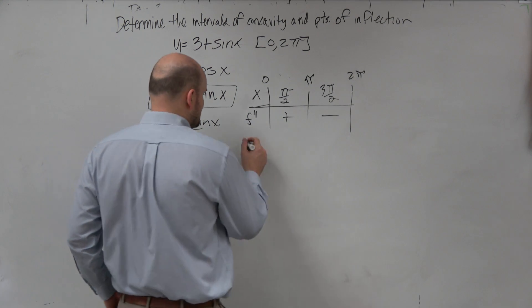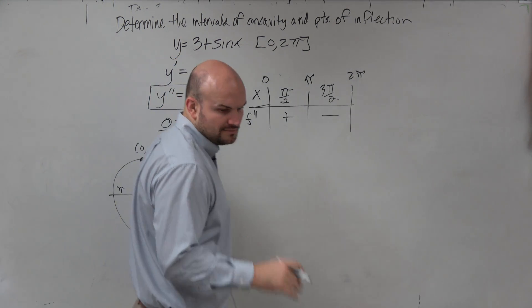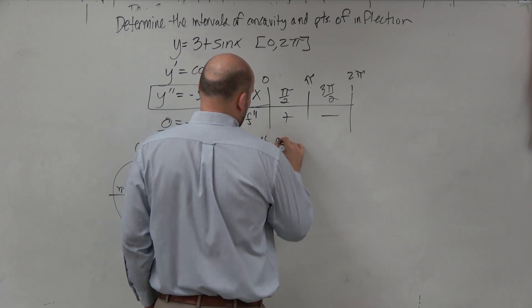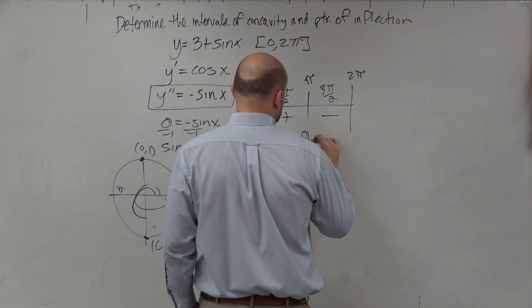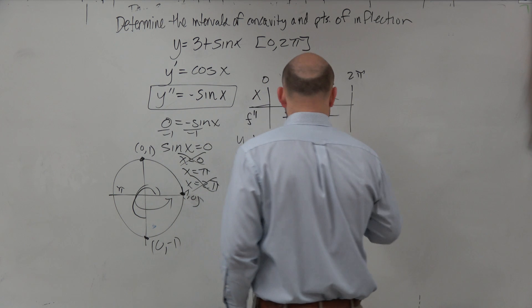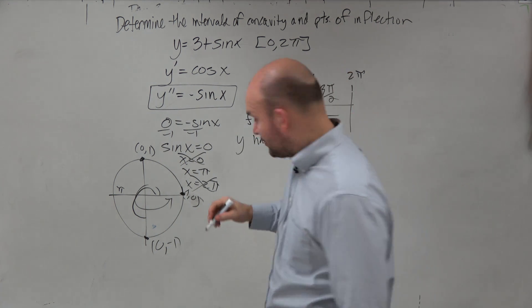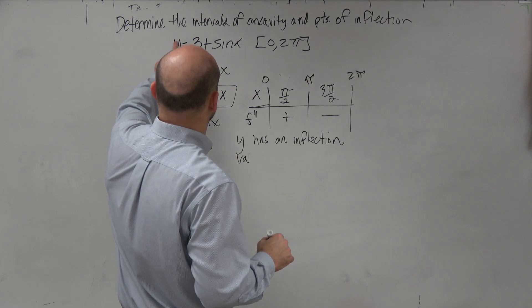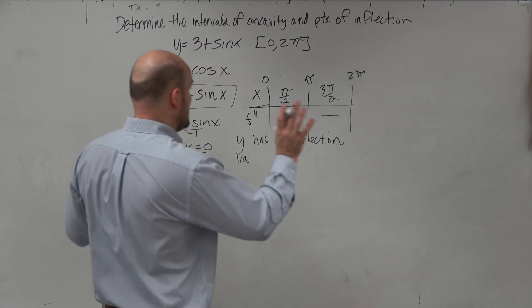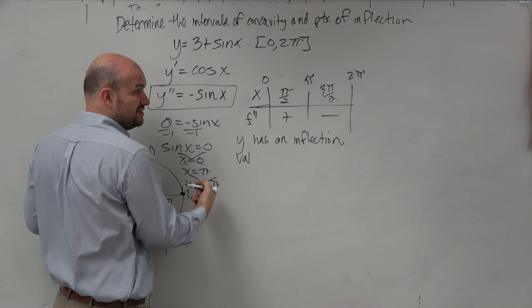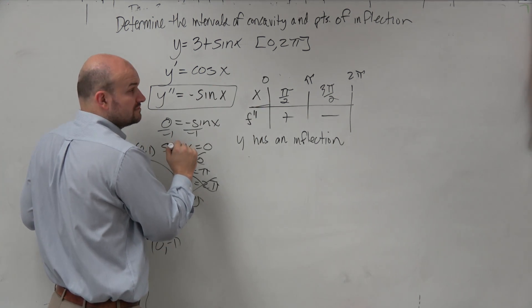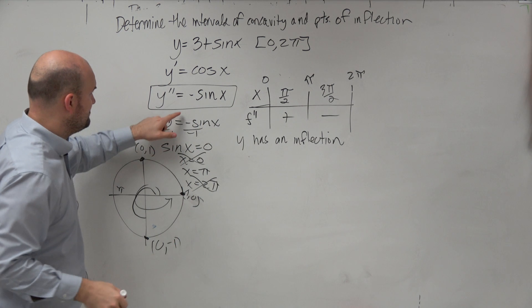So therefore, we can say y has an inflection. We're going to say value, because we're not going to give the points. Oh, and I say give the determinant value and points of inflection. Sorry about that. I did say the points of inflection. So we're not looking for the value. We're looking for the points, right?